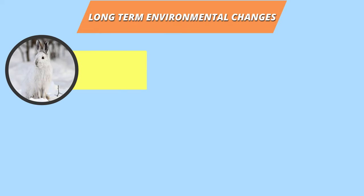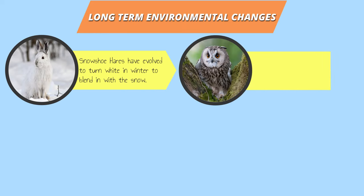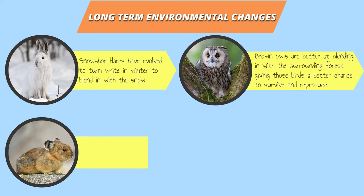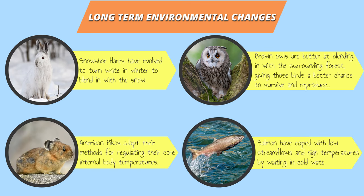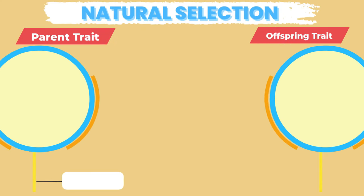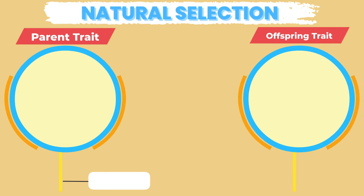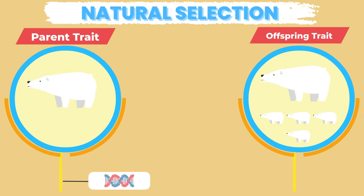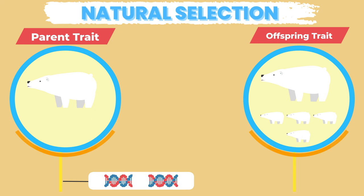Long-term environmental changes may also cause genetic variations in a population that help them adapt, survive, and gain an advantage in the ecosystem. This process is called natural selection. In natural selection, organisms with traits that are better suited for the environment are more likely to survive and reproduce, passing on their traits to the next generation.